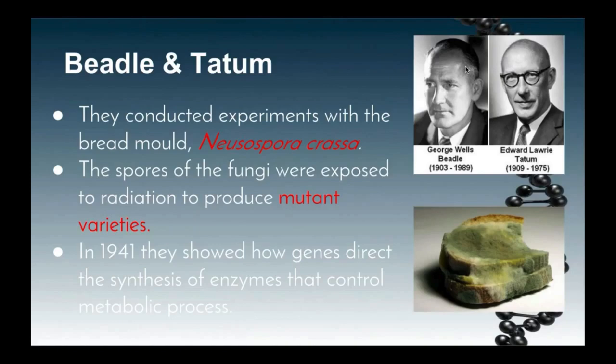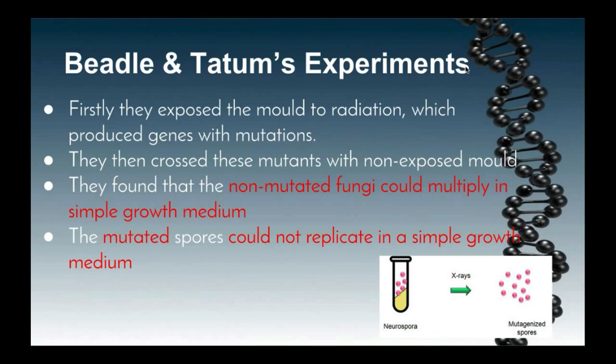Their aim was to investigate the effect of radiation on the production of enzymes. To do this, they exposed the bread moulds to x-rays, a form of radiation. The moulds that were exposed to the x-rays produced genes that were different to the original genes — therefore mutations. They then crossed these mutated spores with the non-mutated spores.